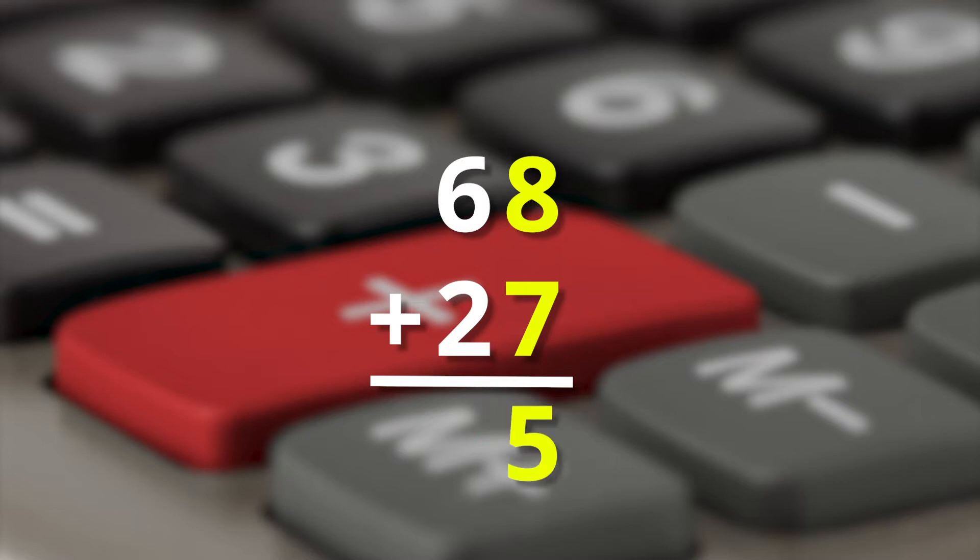You write the five ones in the column below the eight and seven. Then you take the one ten and regroup it by writing it above the six and two in the tens column. Then you add as usual. So you end up with a five in the ones column and a one plus six plus two or nine in the tens column. So the sum of sixty-eight plus twenty-seven is ninety-five.